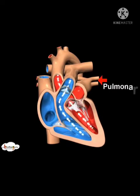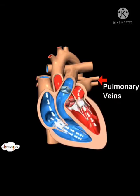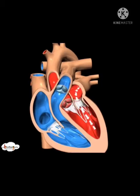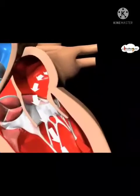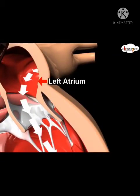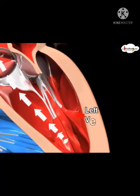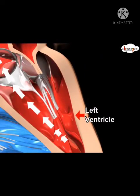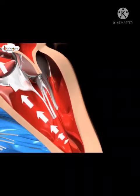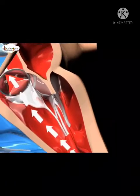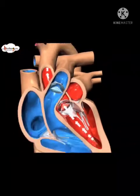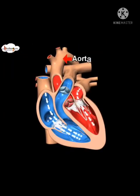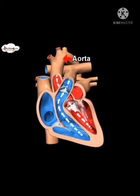After oxygenation, blood travels through the pulmonary vein and is received in the upper left chamber, that is the left atrium, which pumps it into the left ventricle below. Then it is pumped into the aorta, which is the source of many arteries that carry oxygenated blood to different parts of the body.